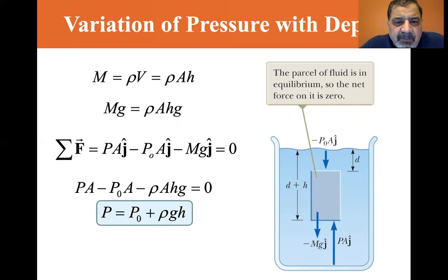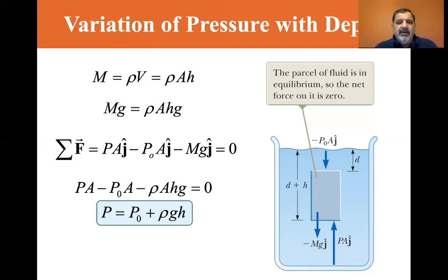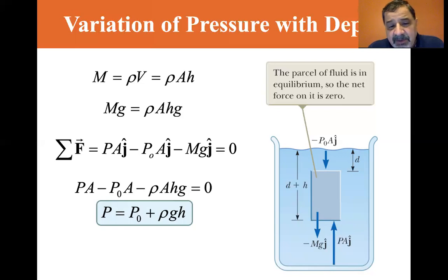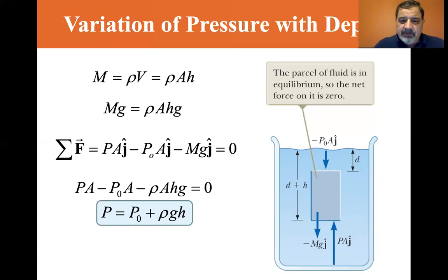Since mg equals rho·A·h·g, we have P·A minus P₀·A minus rho·A·h·g equals zero. Pulling out the common factor A, the pressure at the bottom of the parcel equals P₀ plus rho·g·h — atmospheric pressure plus the pressure from the column of fluid above.